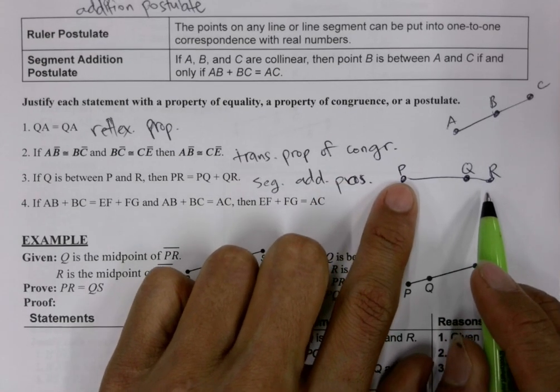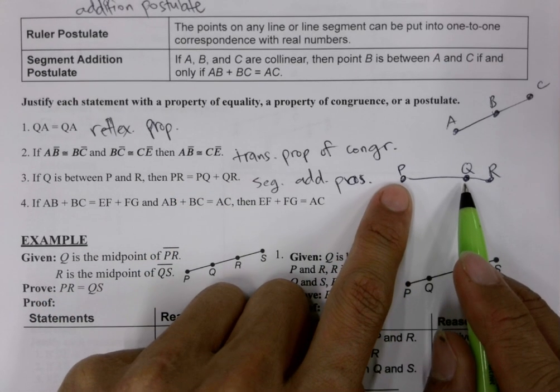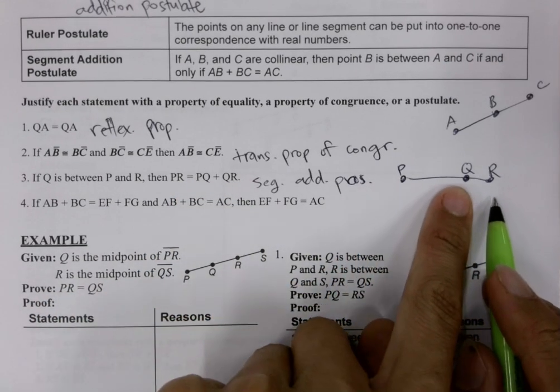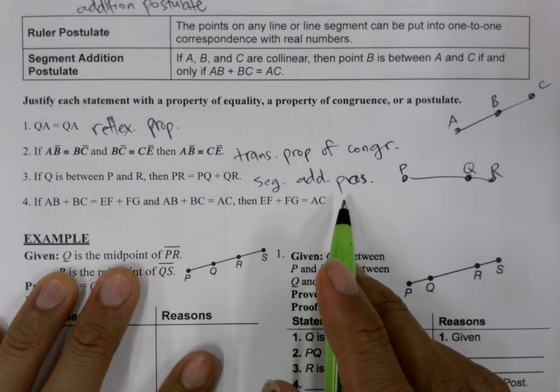And what does segment addition postulate let us say? The measure of the entire segment, PR, is equal to the measure of the first part of the segment, PQ, plus the measure of the second part of the segment, QR. Segment addition postulate. Star of our show.